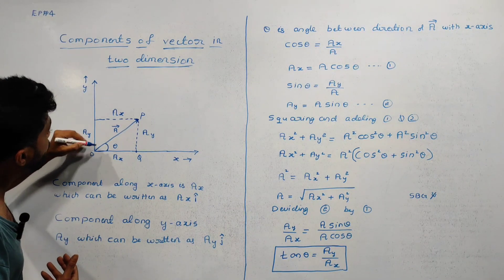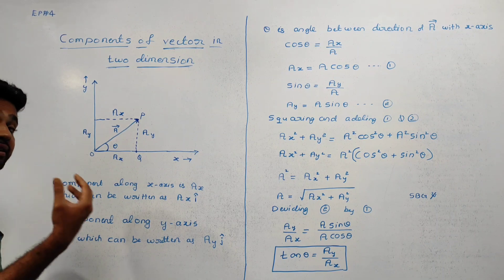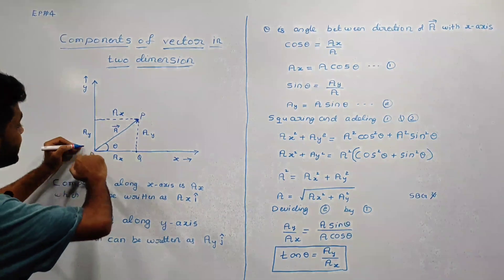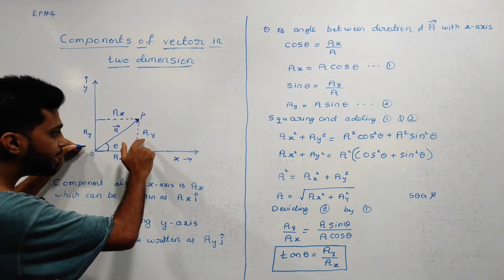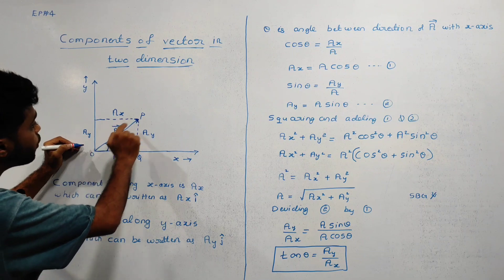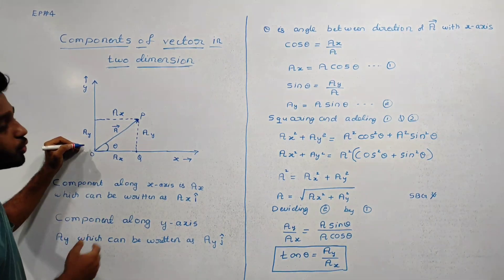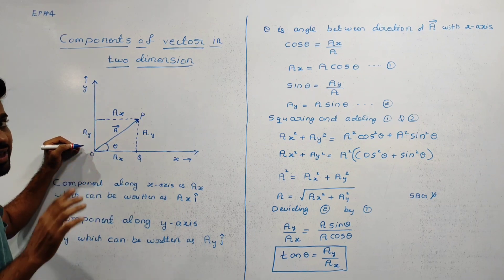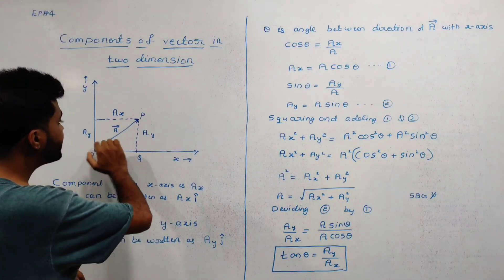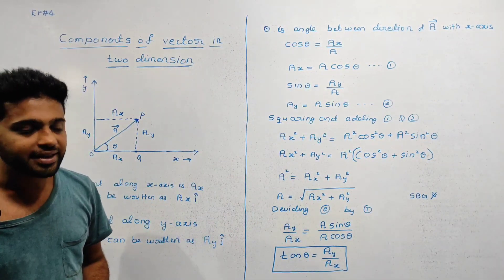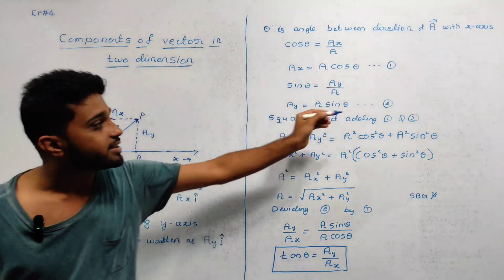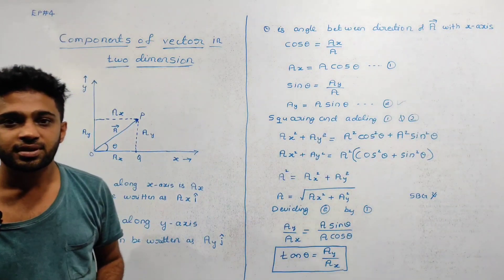From the same triangle OPQ, sin theta is equal to PQ divided by OP. PQ is equal to Ay and OP is equal to A. So, sin theta equals Ay divided by A. Therefore, Ay is equal to A sin theta. This is equation number 2.